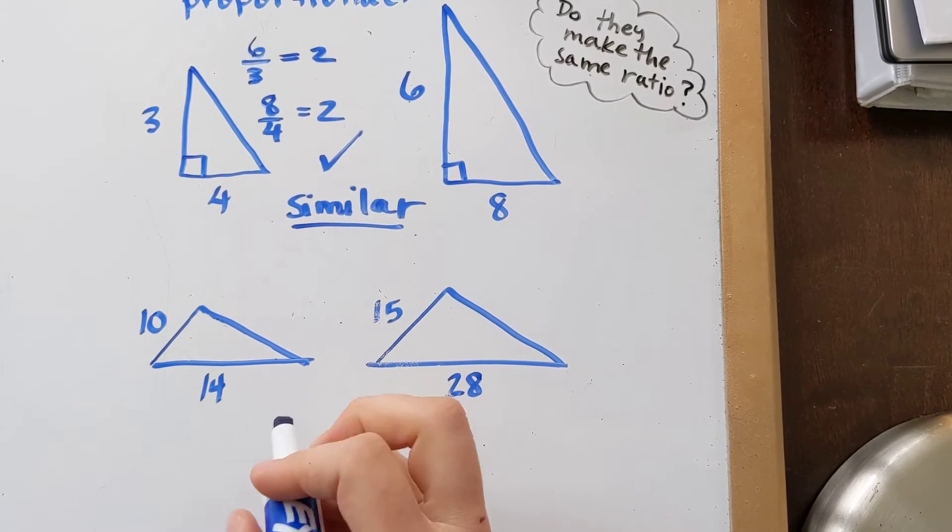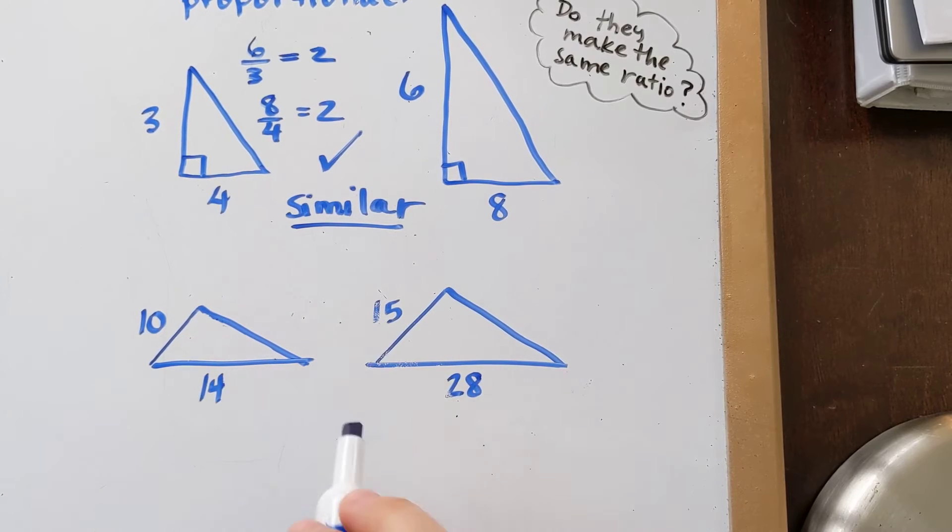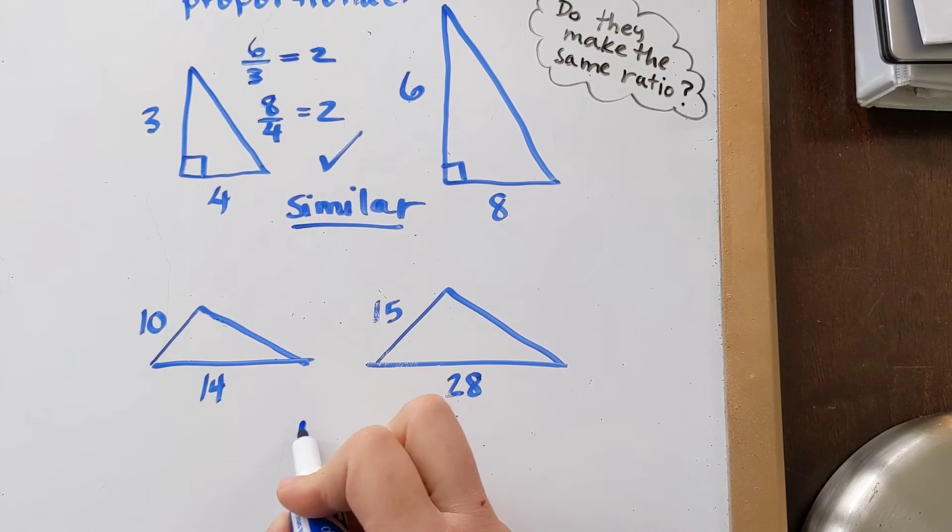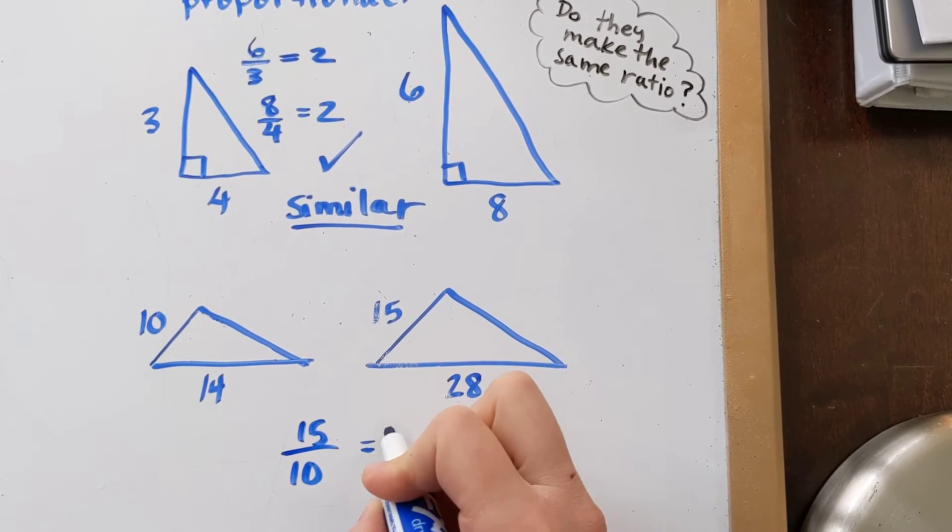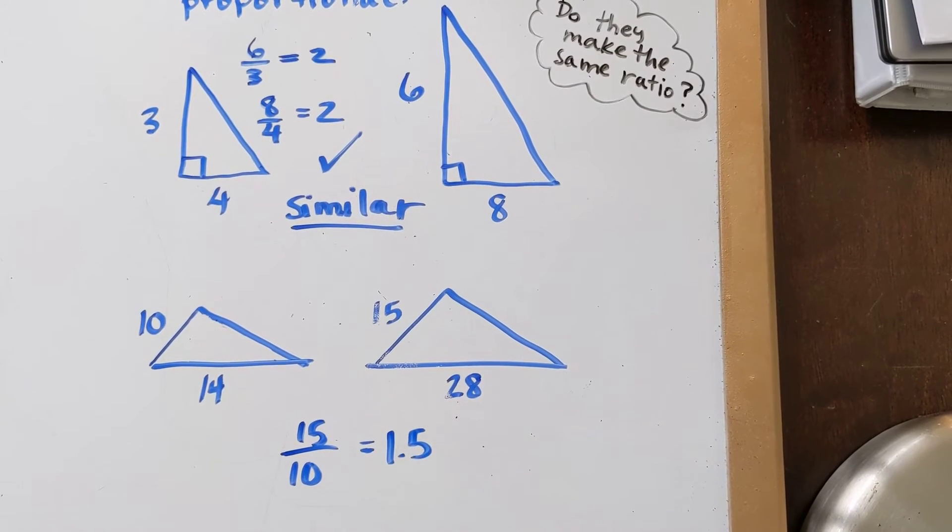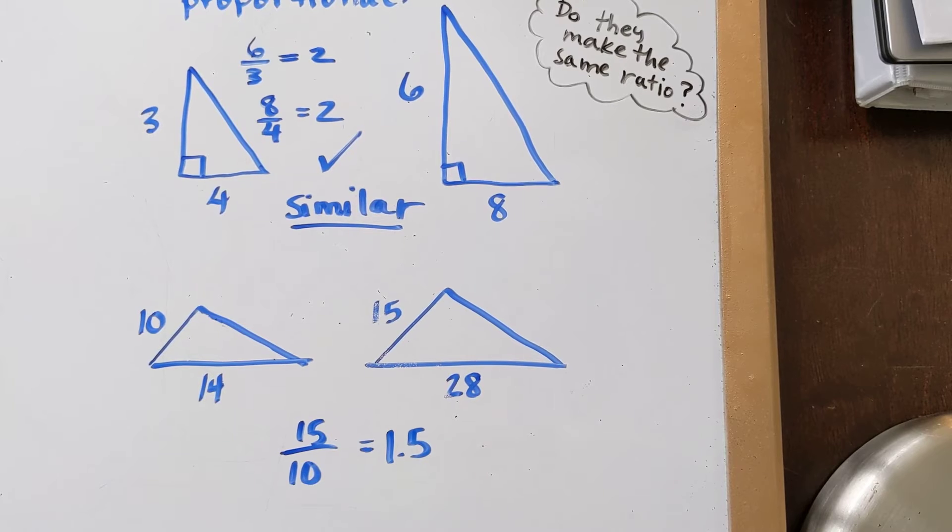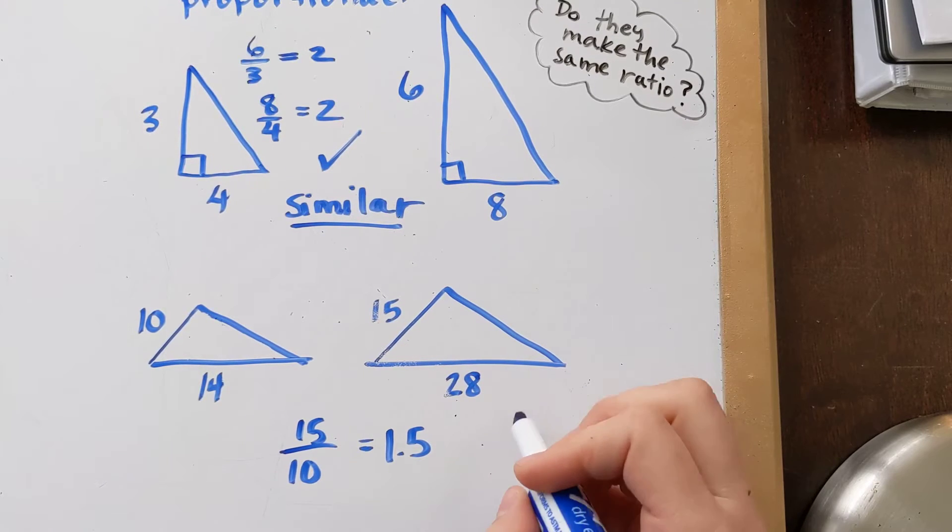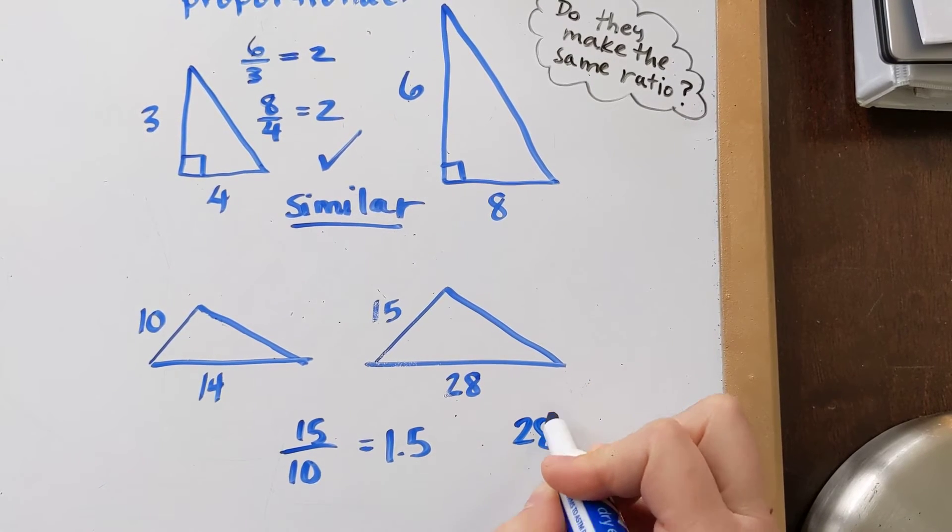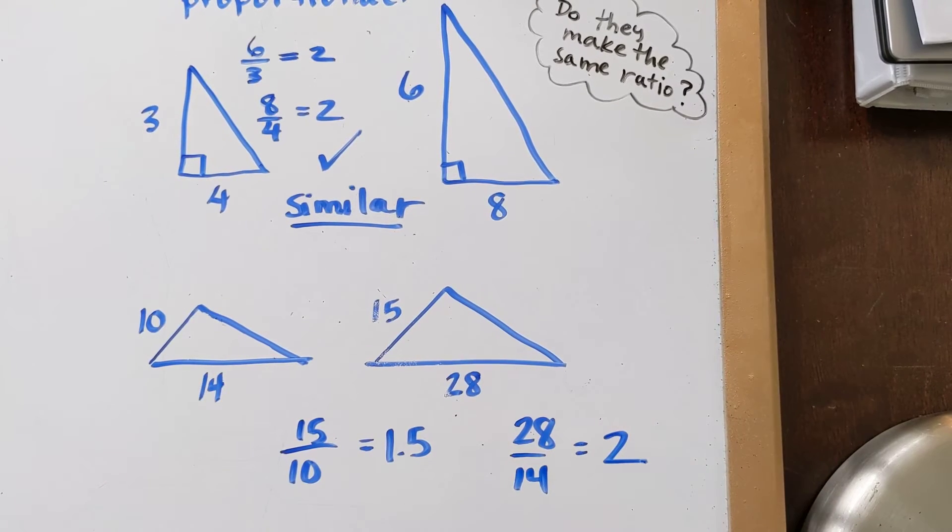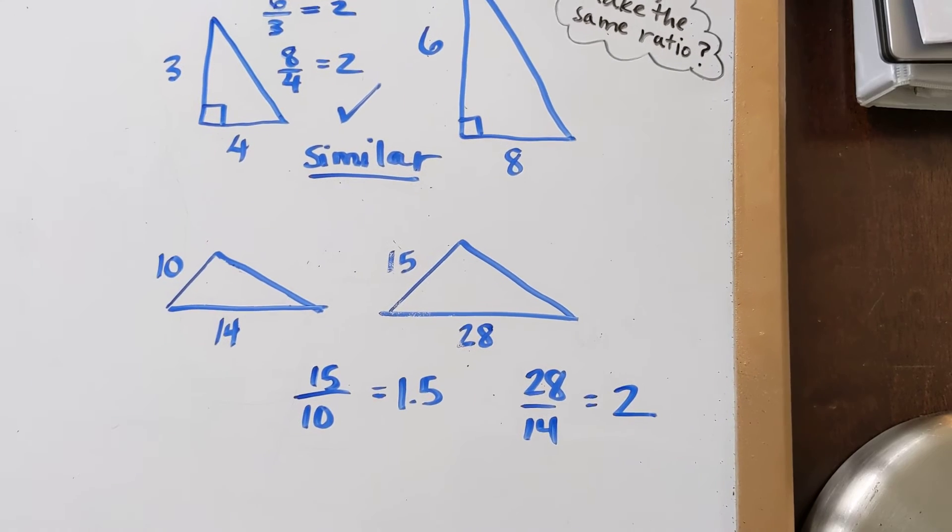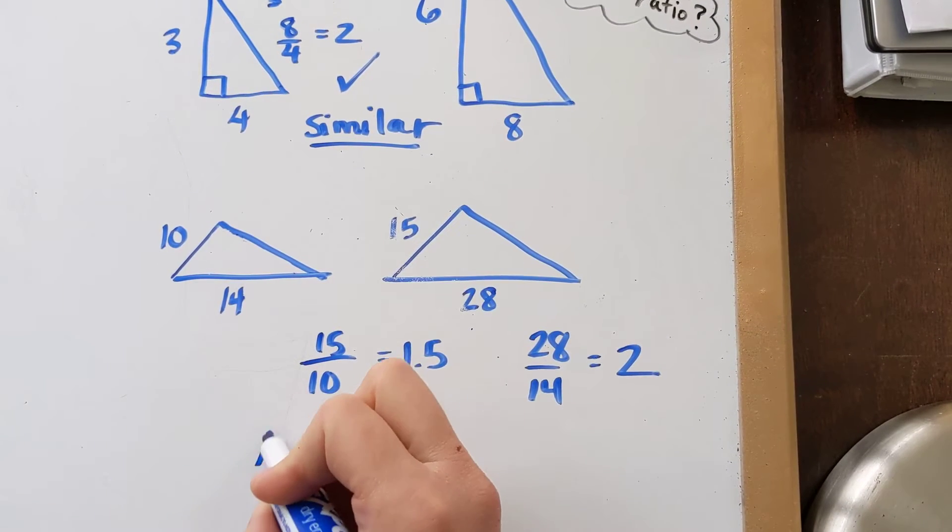Okay, so I know that 15 and 10 are corresponding. They are in the same position relative to these triangles. So 15 divided by 10, when I do that I get 1 and a half. So we are hoping that the 14 and 28 also make 1 and a half. Let's try it out. 28 divided by 14, when you plug that into your calculator, actually you get 2. So these two triangles are not similar.